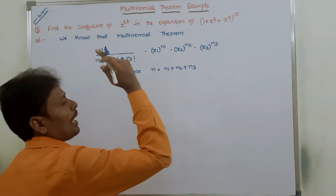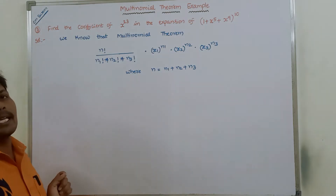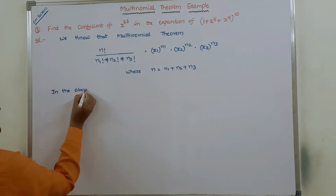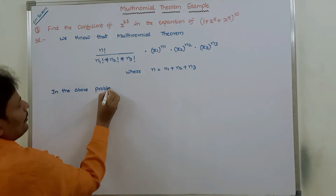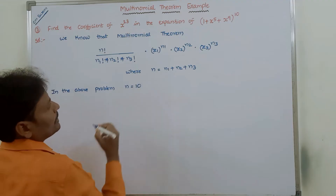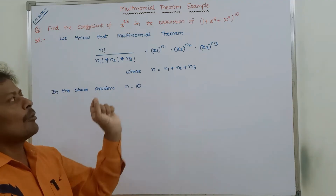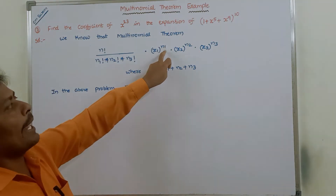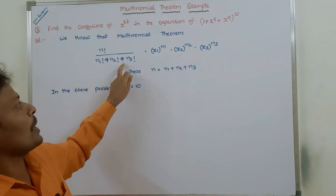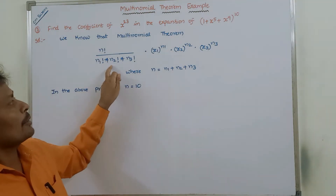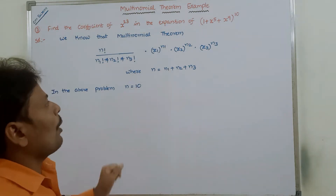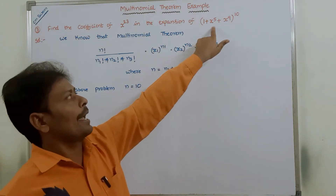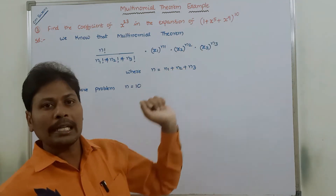Now, what is the n value in the given expansion? The n value is 10. We need to find n1, n2, and n3 values. Once we know those, we substitute them into the formula. The x1 value here is 1, x2 value is x power 5, and x3 value is x power 9.